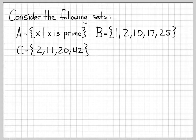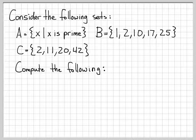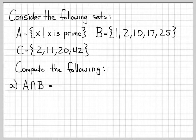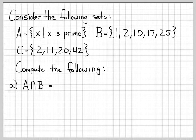In this example, we're going to do a few simple set operations to get practice. First, we're going to compute A intersect B. Intersection is an operation that returns all the common elements between the sets — all elements that are common to both A and B. The result can only contain things that are in both A and B. For this specific example, the easiest approach is to look at B and determine if each element of B is also in A, because A consists of an infinite number of primes while B is a short list.